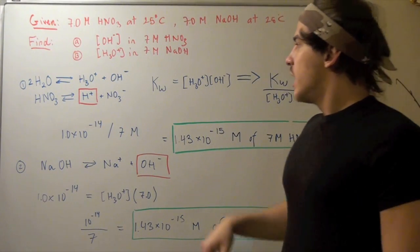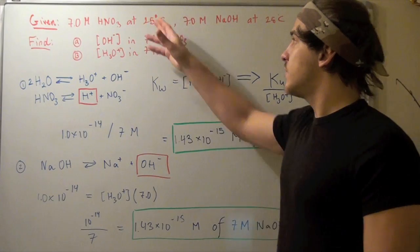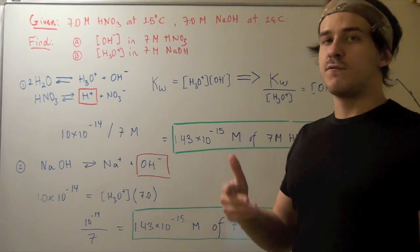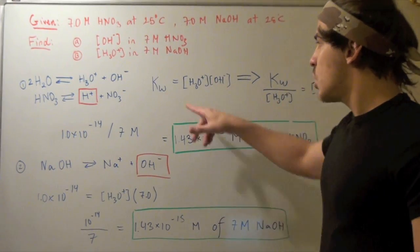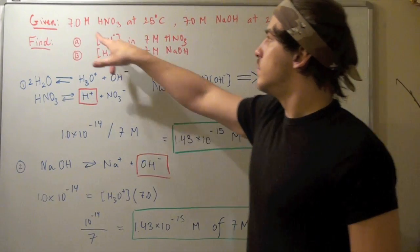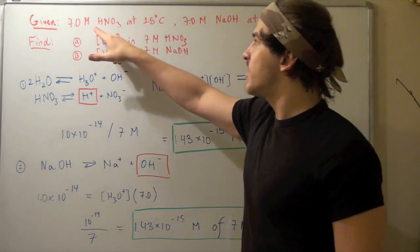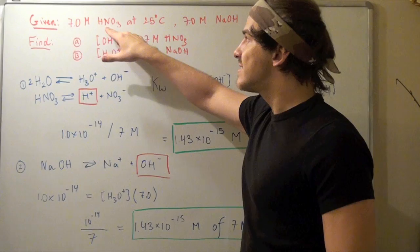We know our KW, that's a constant. At 25 degrees Celsius, it's 10 to the negative 14. Now, we also know this one. That's 7 molar because we're dealing with an acid. This is 7 molar of acid.